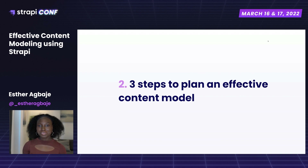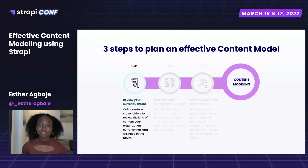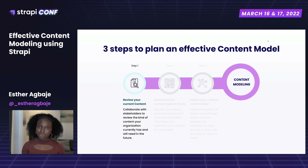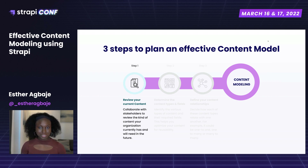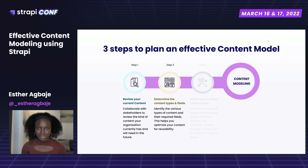There are three steps to creating an effective content model. The first is to review your current content. This is where you sit down with the stakeholders and everyone involved in the content workflow — developers, designers, content creators — to find out the kind of content you're currently creating and the kind of content you need.